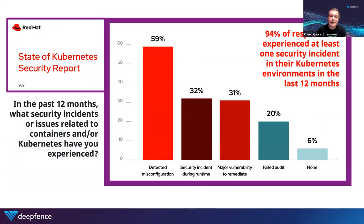Red Hat surveyed a large number of OpenShift users over the last 12 months. One of the questions asked was: in the last 12 months, what security incidents related to Kubernetes and containers have you experienced? 94% of respondents said they had at least one security incident in their Kubernetes environment over the last 12 months. And these are all real-time, runtime incidents — not things that could have been caught in a shift-left project securing code before it moves into production.